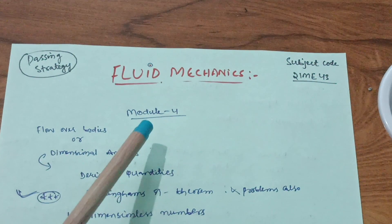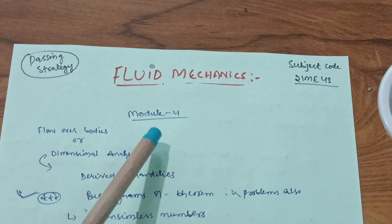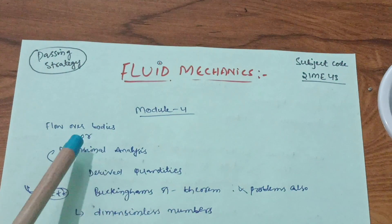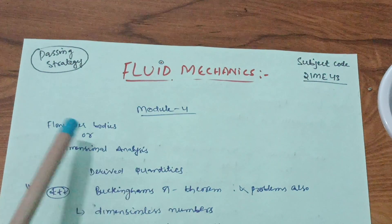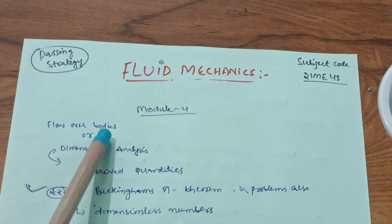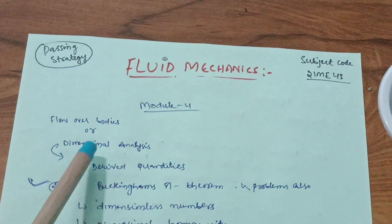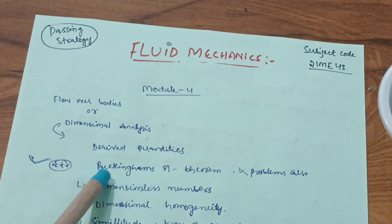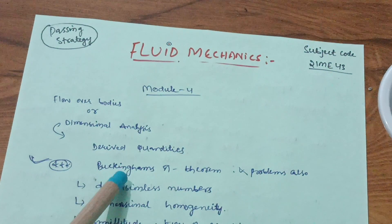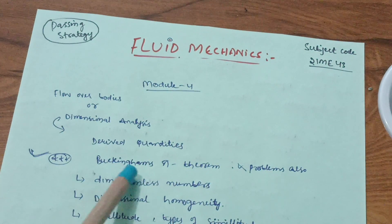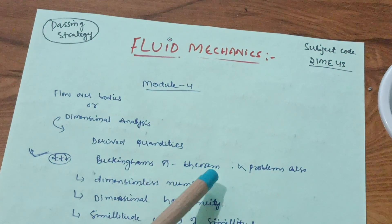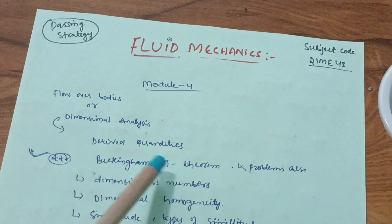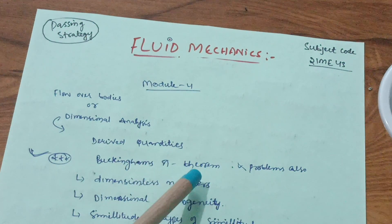Subject code is 21ME43 for students under the VTU 21 scheme. First of all, you have to go through Module 4, which contains two chapters: flow over bodies and dimensional analysis. The dimensional analysis part is a little bit tougher, but the most important — the super important question — is Buckingham's Pi theorem. You should try two or three problems on it.